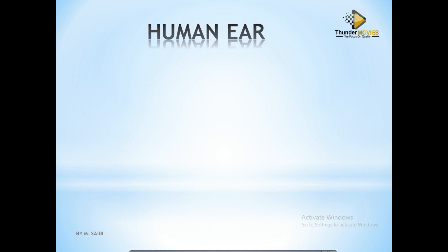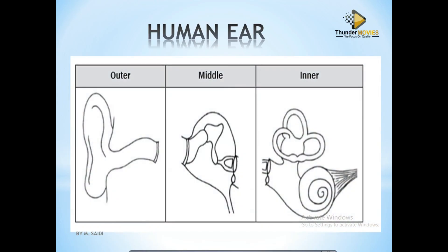Today we are going to be looking at the human ear. The ear is divided into three major parts: the outer ear, the middle ear, and the inner ear. Sometimes when you are answering a question, you can get a question with the middle ear only, the inner ear only, the outer ear only, or the outer and middle ear combined, or the whole structure, and then questions are designed from there.